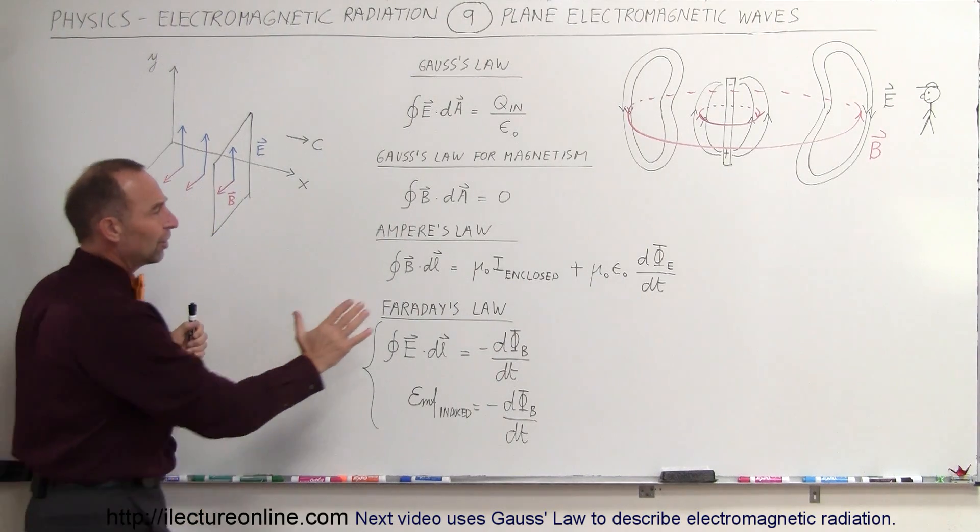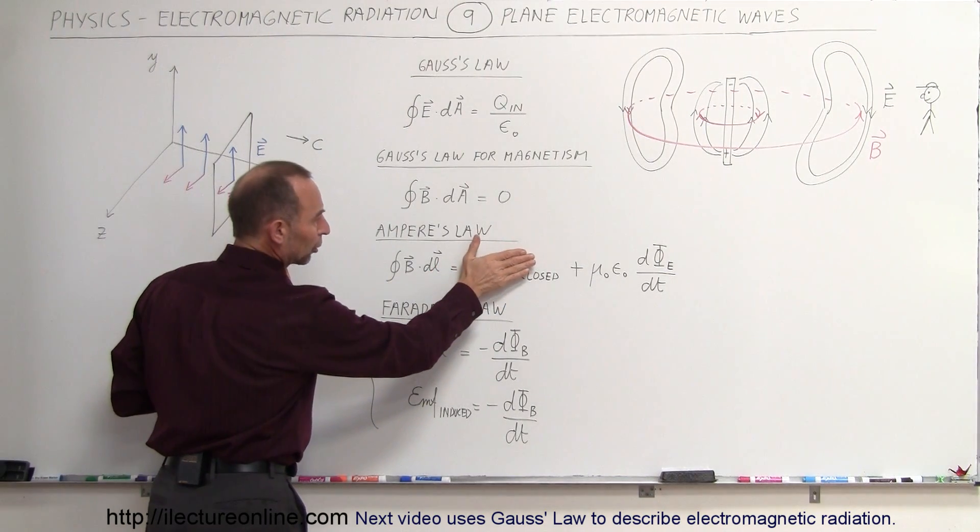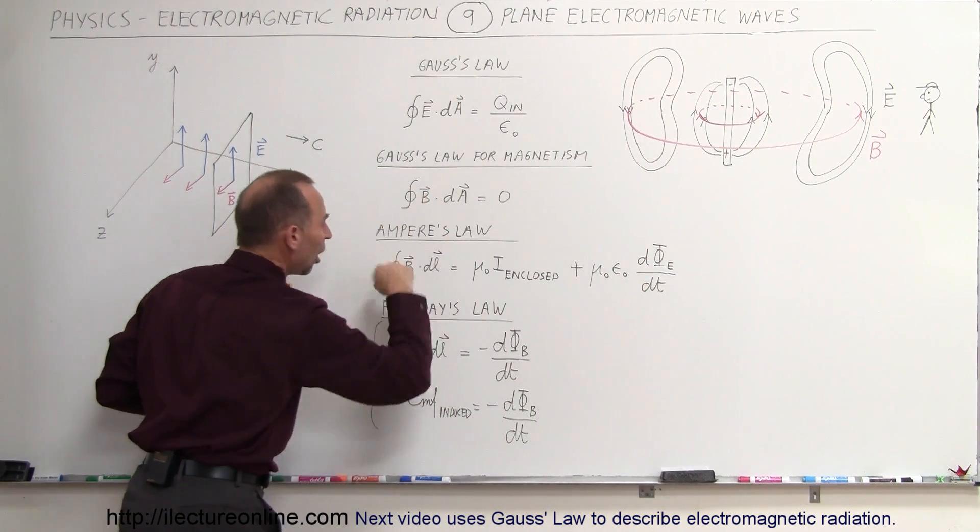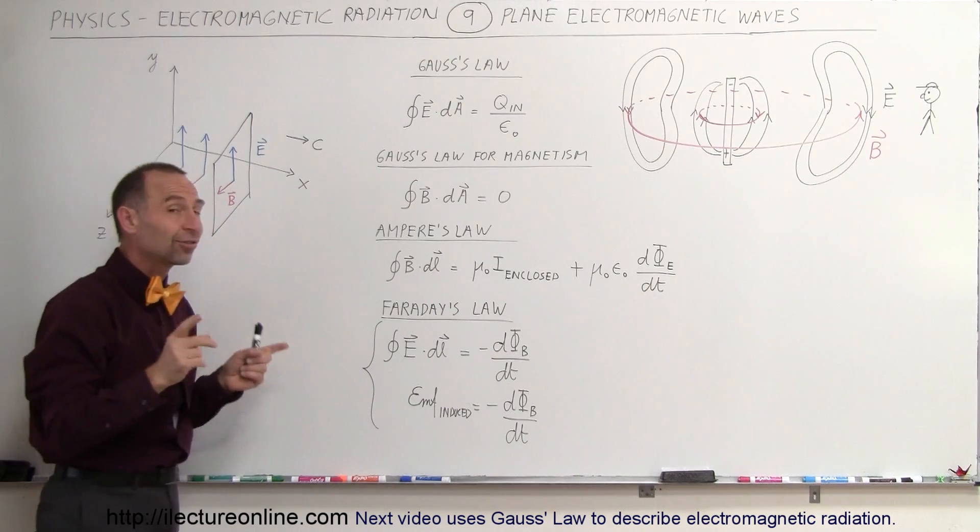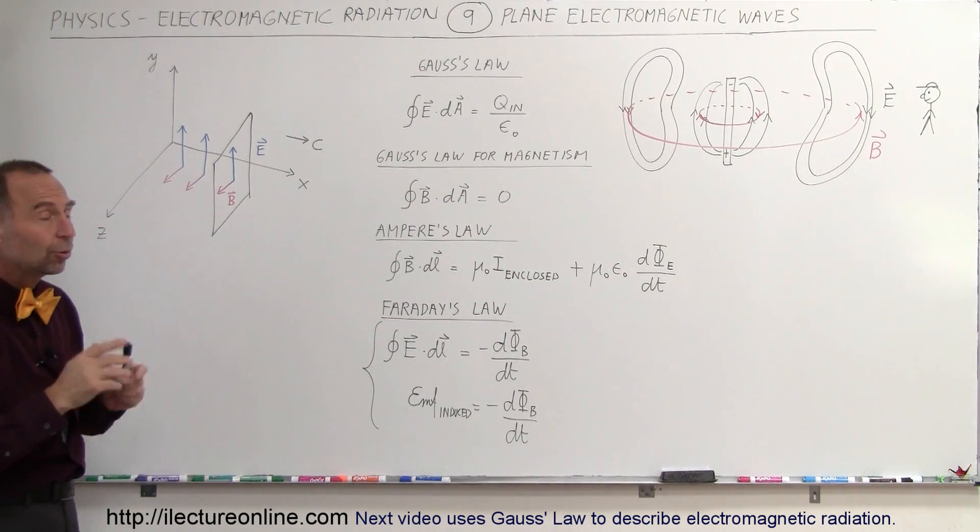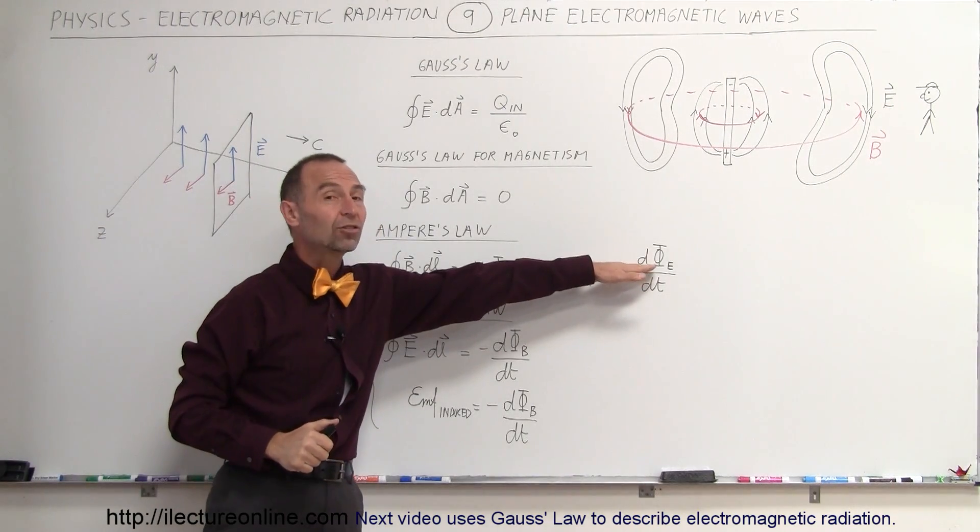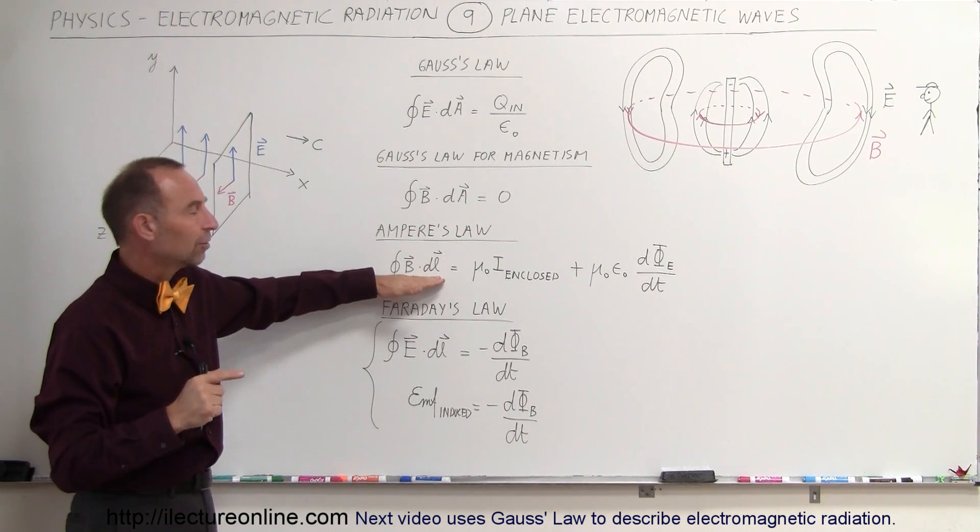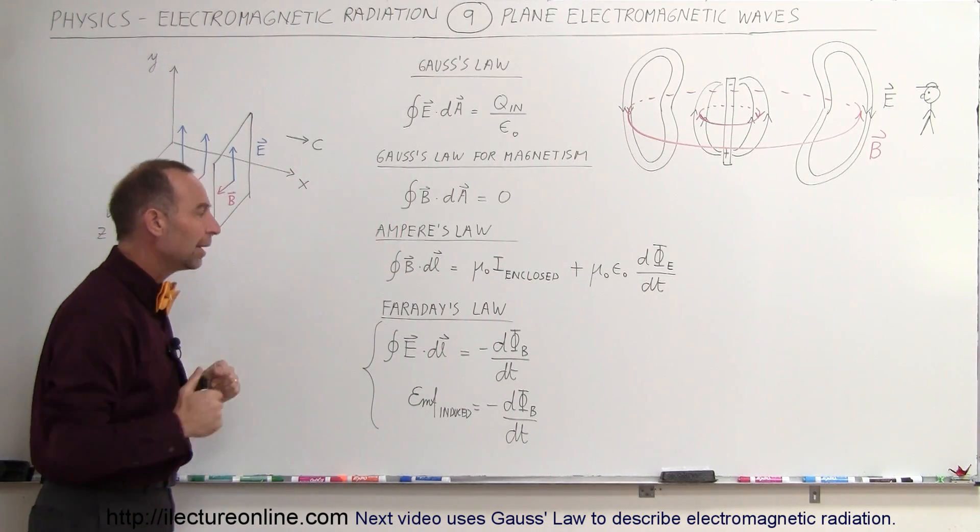And so even though this is going to be zero because there's no current enclosed, there's going to be changes in the flux of the electric field which will cause the magnetic field to exist. So there we already saw the relationship between whenever there are changes to the flux of the electric field, there will be the existence of a magnetic field. And so this equation, Ampere's law, bears that out.